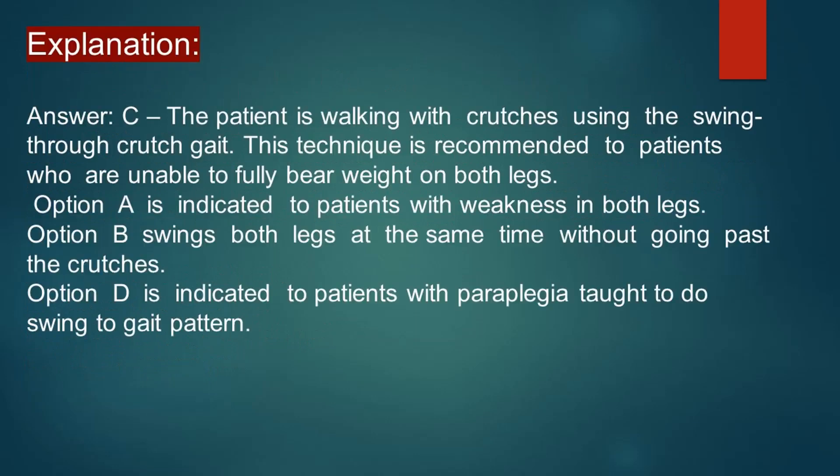The patient is walking with crutches using the swing-through crutch gait. This technique is recommended for patients who are unable to fully bear weight on both legs. Option A indicates the patient has weakness in both legs. Option B involves swinging both legs at the same time without going past the crutches. Option D, the tripod gait, is indicated for patients with paraplegia, who are taught the swing-to gait pattern.